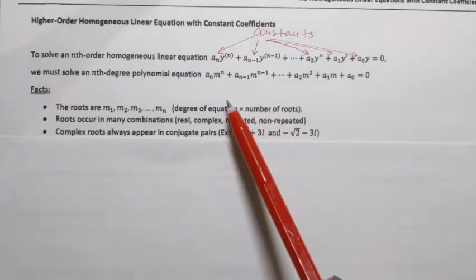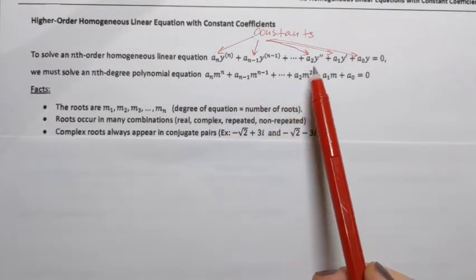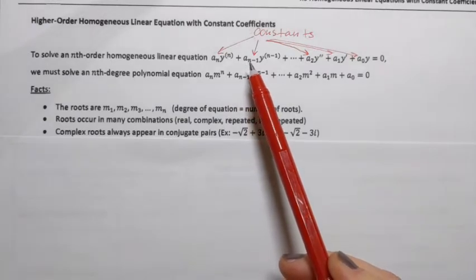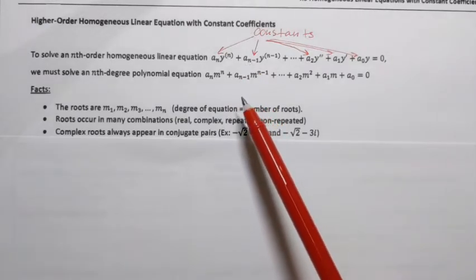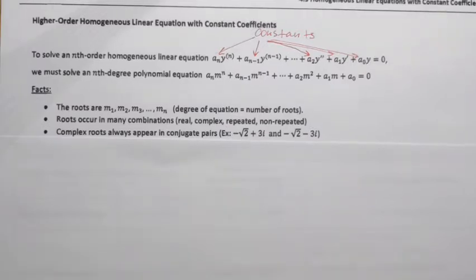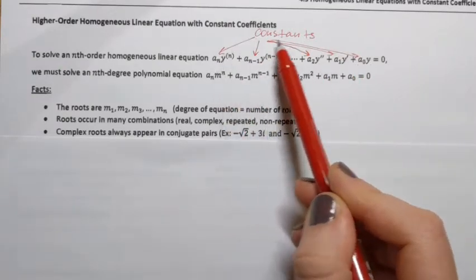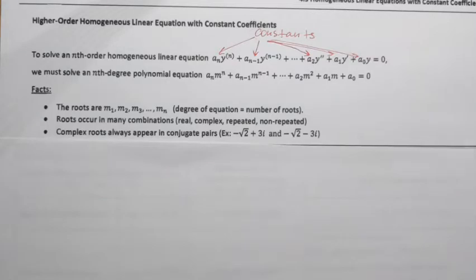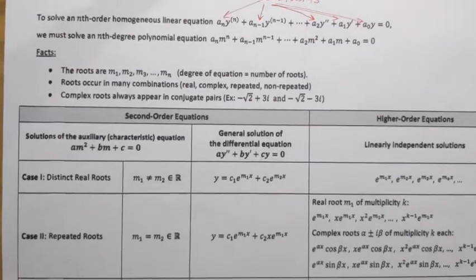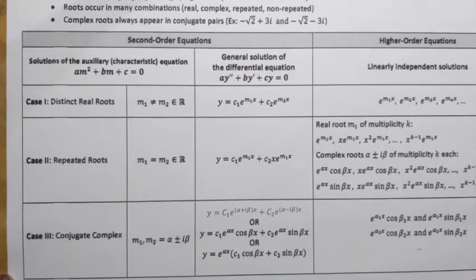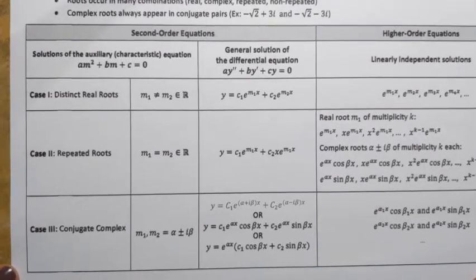Once we've obtained the nth degree polynomial equation for a given differential equation and found its roots, we use a table to see how to obtain solutions for the differential equation. It might look a little overwhelming, but we only need technically one part of it.